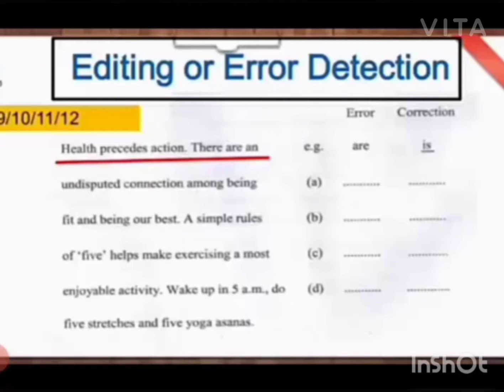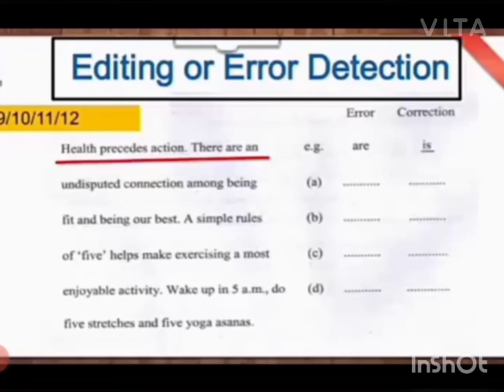Next is 'undisputed connections among being.' Among being — there are two beings here: 'being fit' and 'being our best.' The word 'among' is never used when there are only two things. When it is two, 'between' is used. So 'among' will be replaced by 'between.' Between being fit and being our best — two things are there — so 'between' will be used over here.